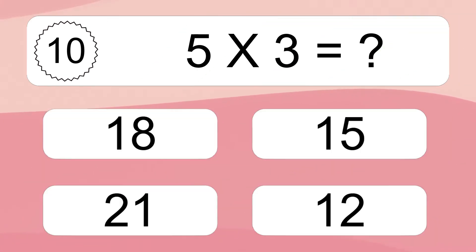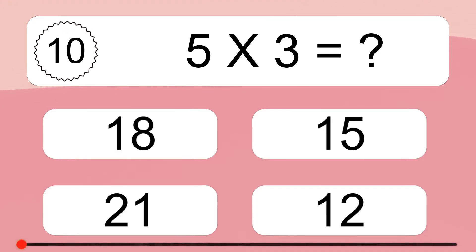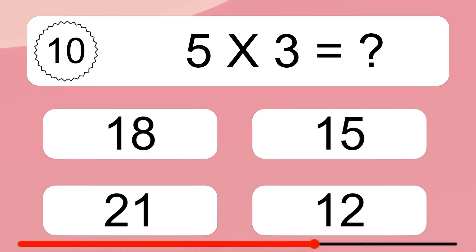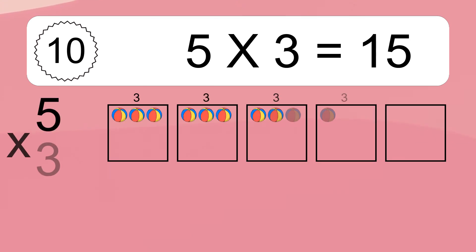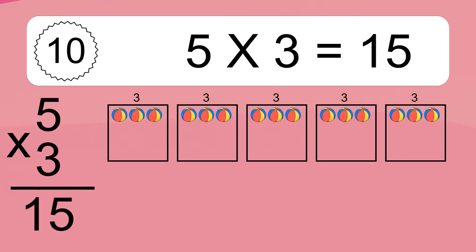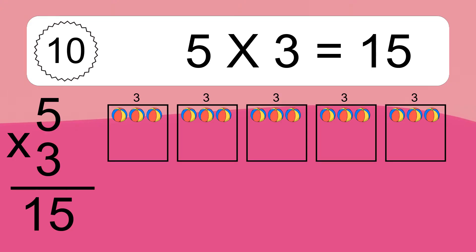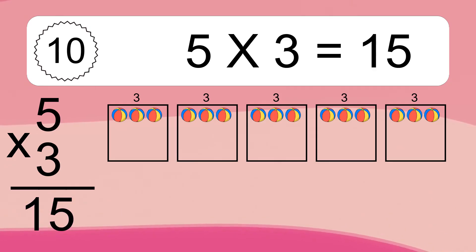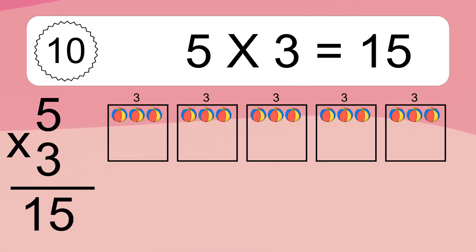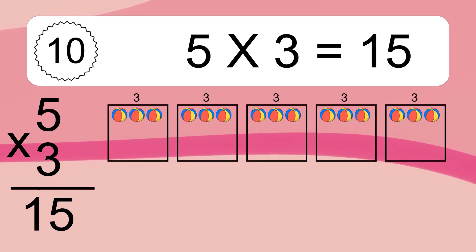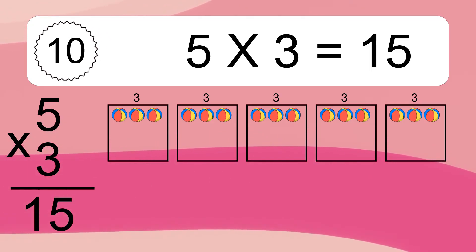Five times three equals what? Five times three equals 15. We have five boxes and each box has three colorful balls inside. If you count all the balls in all the boxes together, you will have five times three balls. This equals 15 balls.